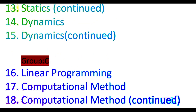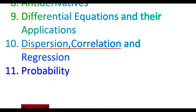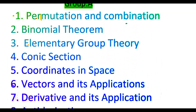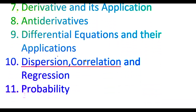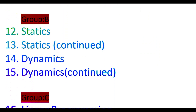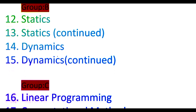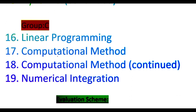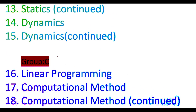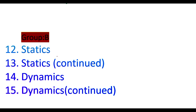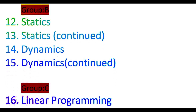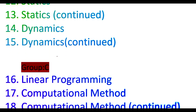Group A is compulsory — students have to study all the topics of group A. For group B or C, students have to select one of the groups, either B or C.